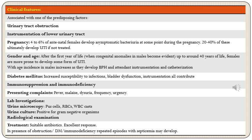Another scenario is pregnancy: 4 to 6 percent of antenatal females develop asymptomatic bacteriuria at some point during pregnancy, and 20 to 40 percent of these will ultimately develop UTI if not treated. Regarding gender and age, after the first year of life up to around 40 years, females are more prone to develop UTI than males due to predisposing factors like short urethra and absence of protective prostatic secretions. However, with age the incidence in males increases as they develop BPH requiring frequent instrumentations.